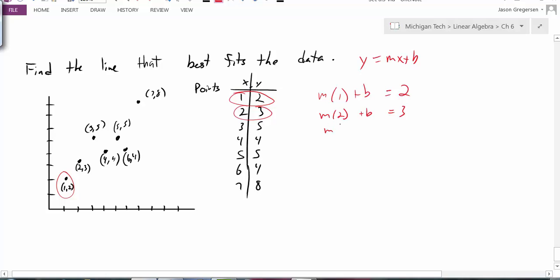I could keep going, m times 3 plus b equals 5 would be true if this point were on the line. So on and so forth. But what I see here is I'm just generating a system of equations. And I should be able to take that system of equations and rewrite it as a matrix equation.